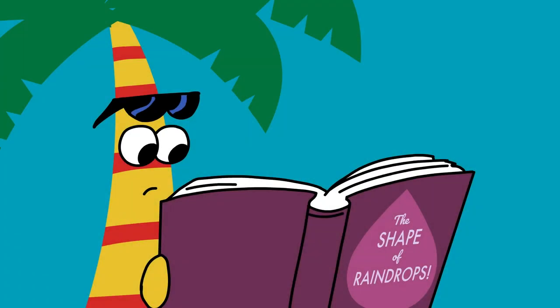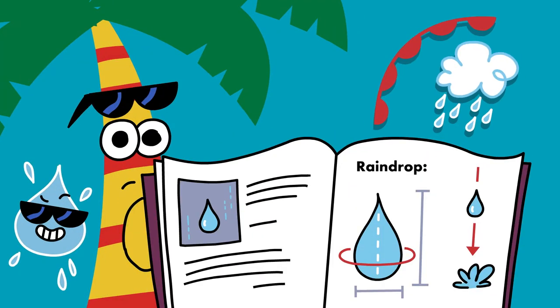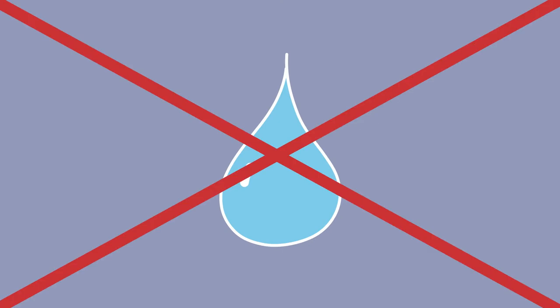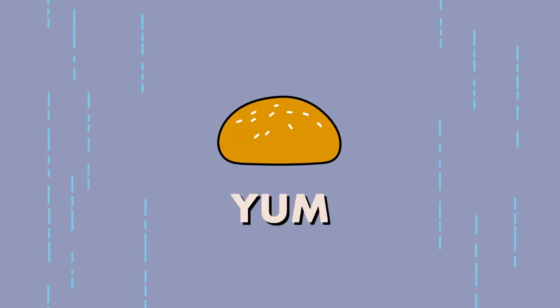Almost everywhere you see images of raindrops — in books, cartoons, on weather maps — they're teardrop-shaped, right? In reality, a raindrop starts out round. As it falls, it becomes flattened on the bottom with a curved top, like a hamburger bun. Yum! But why?